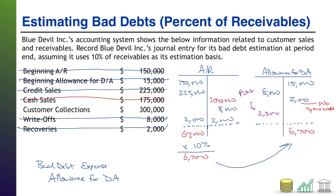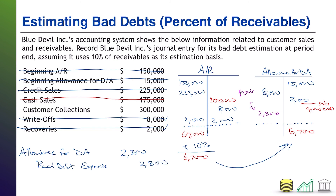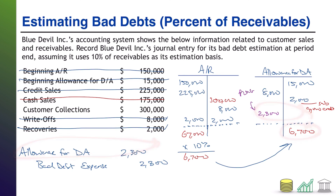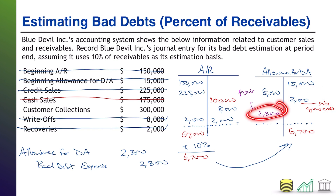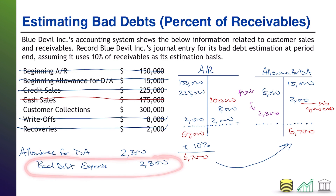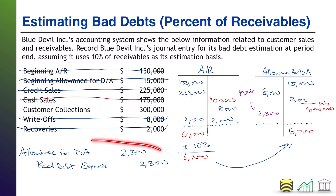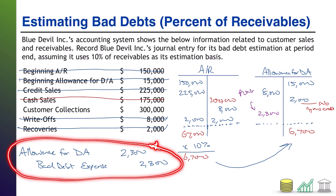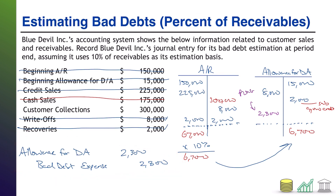We're debiting allowance, so our journal entry in this case actually flips. Allowance for doubtful accounts will be the debit, and bad debt expense will be the credit — a rare instance where you're actually going to credit an expense account for $2,300. What's happening here is we had overestimated previously and now we're correcting that overestimation. When we estimated previously, we would have debited bad debt expense; now as part of correcting the overestimation, we're undoing some of that prior bad debt expense. Your journal entry can flip the other way if you've previously overestimated.